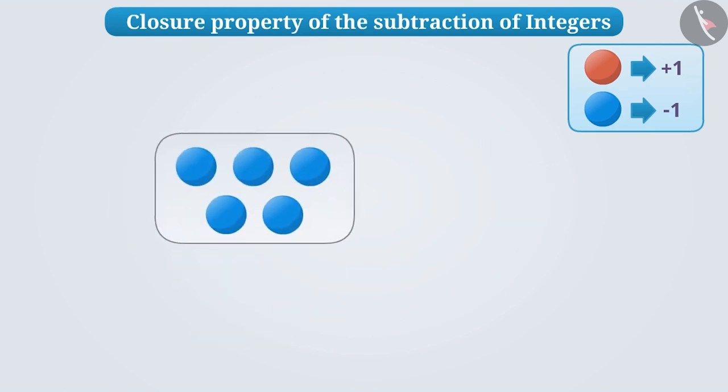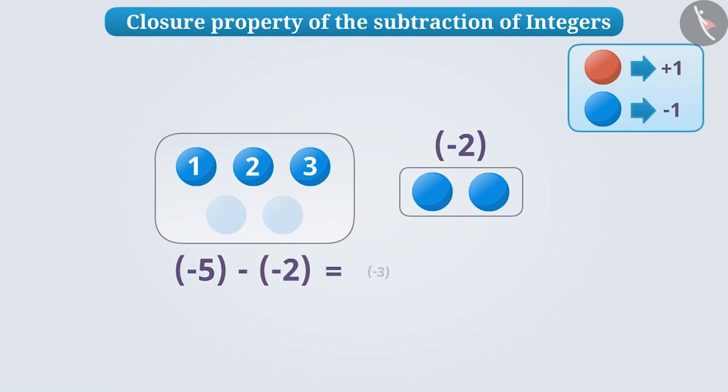Similarly, if we have five blue balls and we take out two of these blue balls, then we are left with the remaining three blue balls. That is, minus five minus minus two is equal to minus three. Here too, on subtracting two integers, we get an integer.